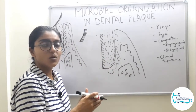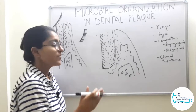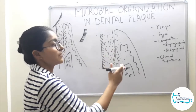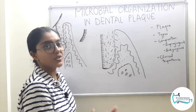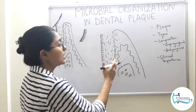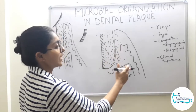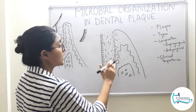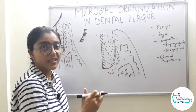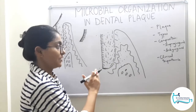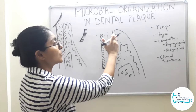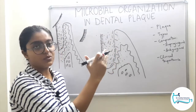Host tissue invasion is a key feature distinguishing a pathogenic strain from a non-pathogenic one. Bacteria are also found within the tissues and on the bone. In terms of stratified organization of tissue-associated plaque: the apical third harbors gram-negative rods, and filaments are absent there. Spirochetes are more present in the apical portion, while filaments are more present in the cervical portion.